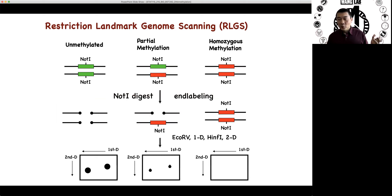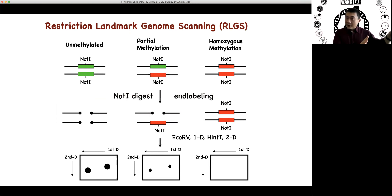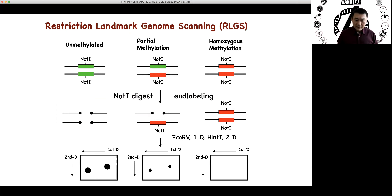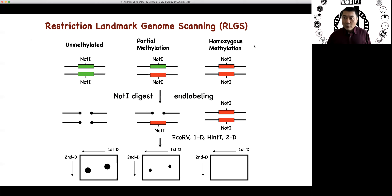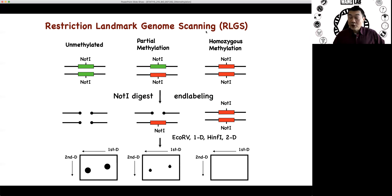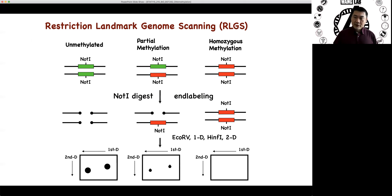The interesting thing is, most of the current day genomics is based on old molecular biology and biochemistry, except we have very different ways of reading out the output. So this is really how people did genomics back then. I'm telling you about this experiment called Restriction Landmark Genome Scanning. It turns out that there are restriction enzymes that are sensitive to ding mesulation.